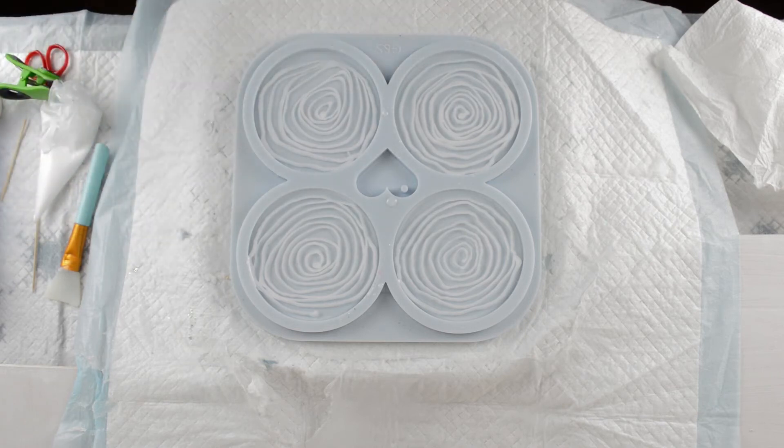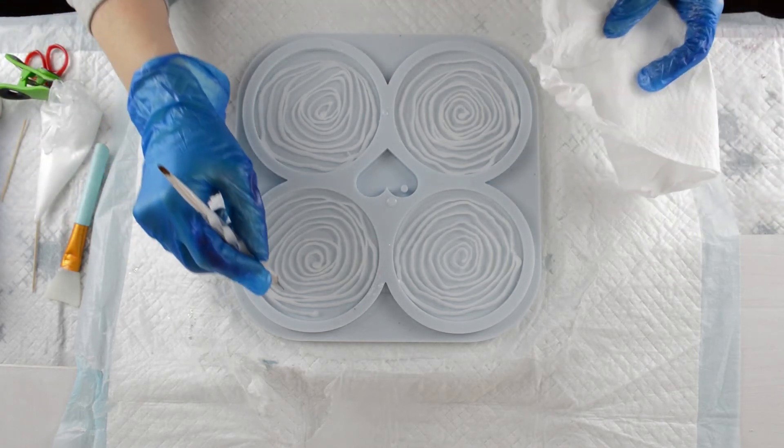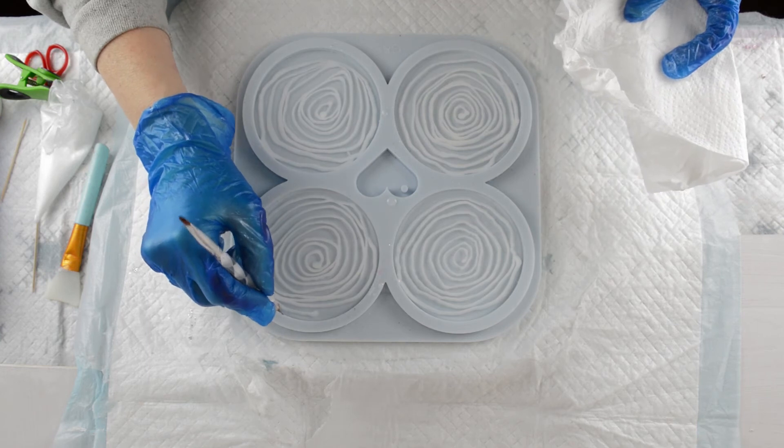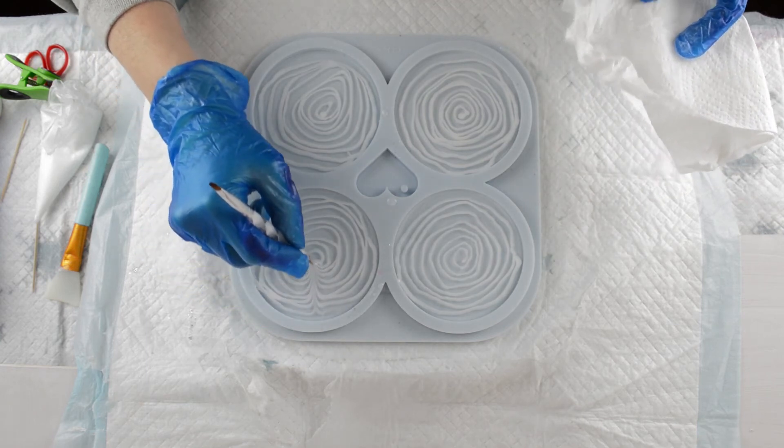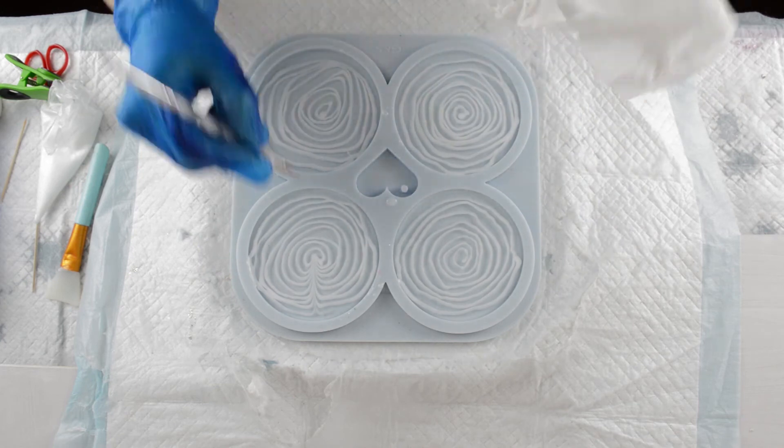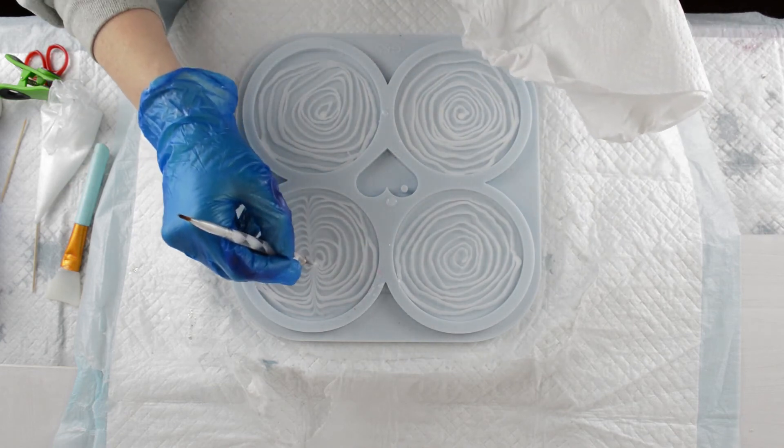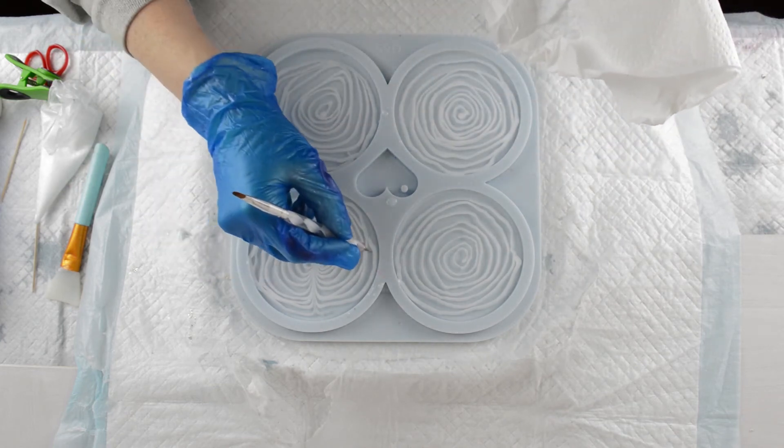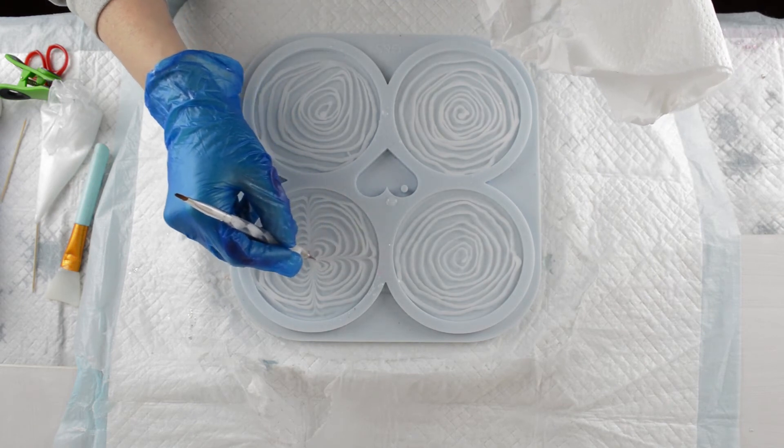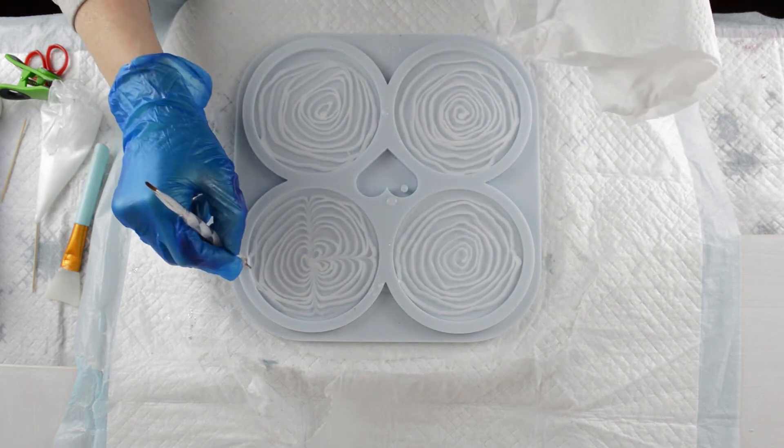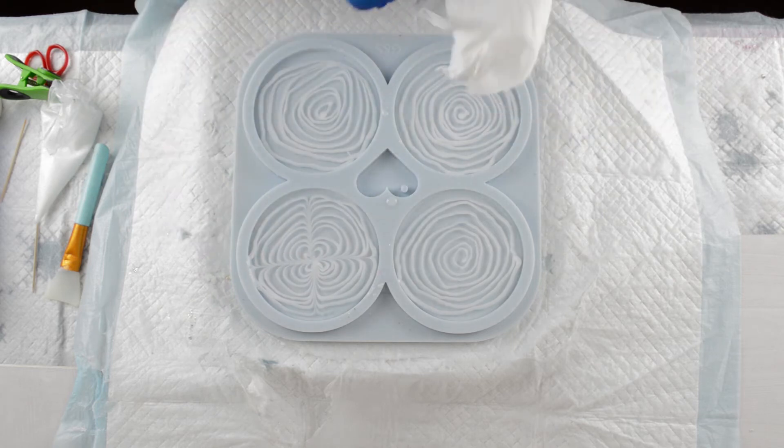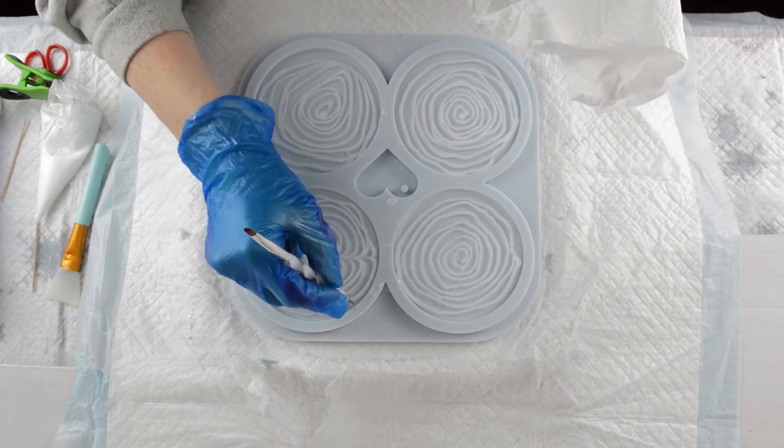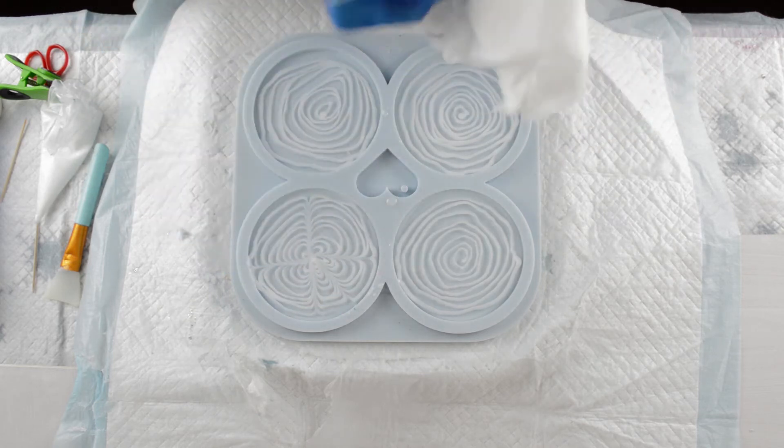And again, I'm going to go from the outside in to make my petal shape. And again, I'm not touching the bottom of the mould. I'm just taking the stylus or the dotting tool through the resin.